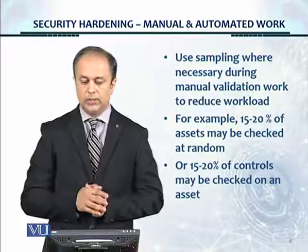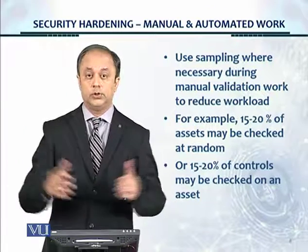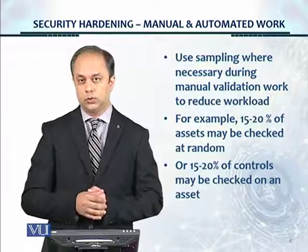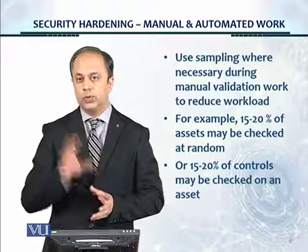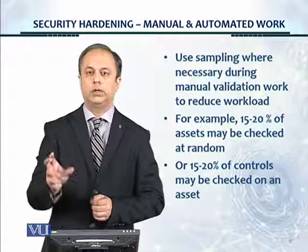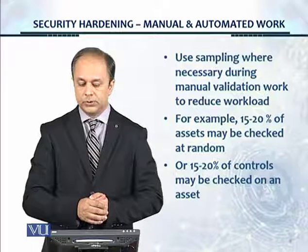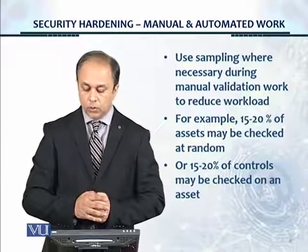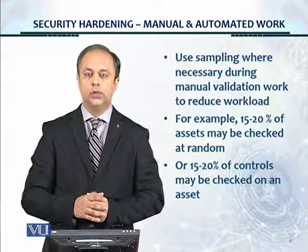Use sampling when necessary during manual validation work to reduce the workload, because there can be hundreds of controls on one asset and thousands across multiple assets in a whole IT infrastructure. You can use 10%, 15%, or 20% sampling — either 15% to 20% of assets checked at random, or 15% to 20% of controls checked on a given asset.